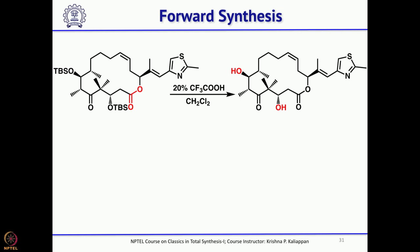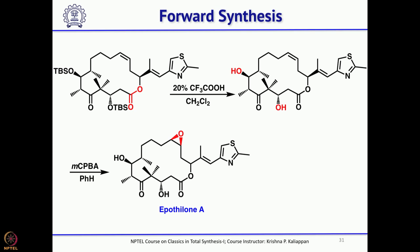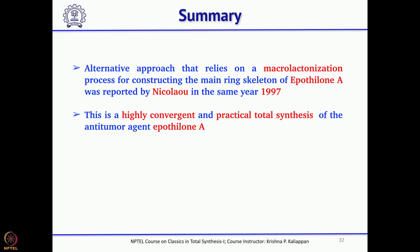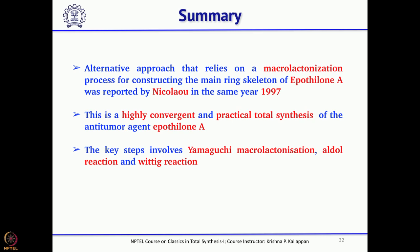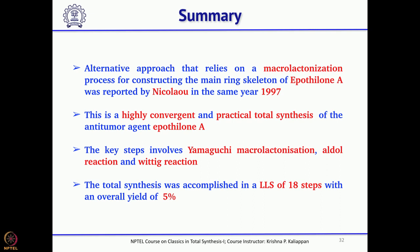Both remaining TBS groups were then easily cleaved by treating with trifluoroacetic acid. Finally, epoxidation of the double bond with MCPBA gave Epothilone A. In summary, Nicolaou's group synthesized Epothilone A by a second route in the same year. The key reactions are Yamaguchi's macrolactonization, a highly stereoselective aldol reaction, and a Wittig reaction to install the double bond. Overall, 18 steps were involved with a yield of 5%.